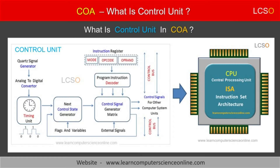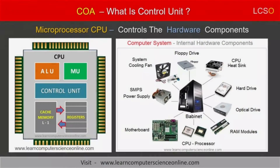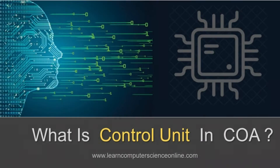Let us now understand how the control unit works and controls the various operations performed by the computer. One of the main functions of the control unit is to control and direct the various operations performed by the central processing unit. The control unit controls the operations of the various hardware components by generating and transmitting the necessary control signals, which directs the operations of the various hardware components connected to the system. These control signals are an essential part of the computer architecture to synchronize the operations of the various hardware components and external peripheral devices connected to the system.